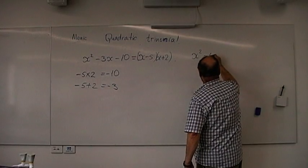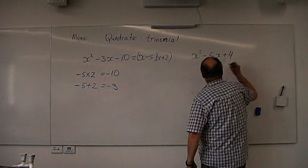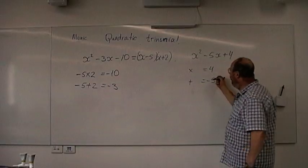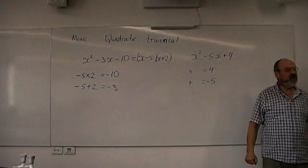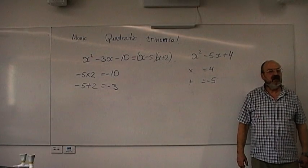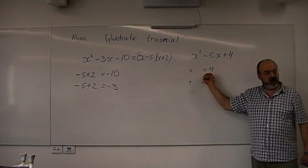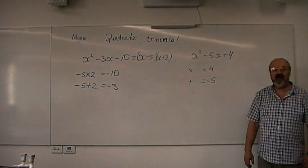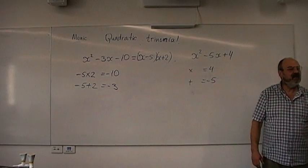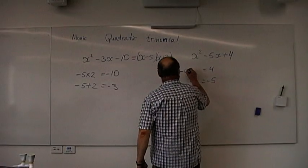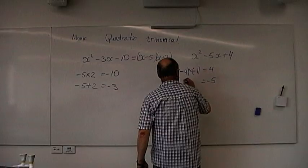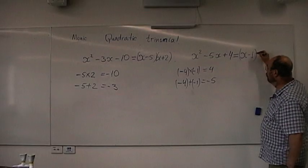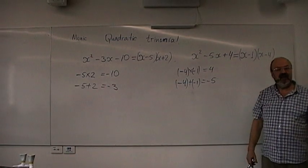Another example: x squared minus 5x plus 4. We're looking for two numbers which multiply to positive 4 and add up to negative 5. Since they multiply to a positive number and add up to a negative number, both must be negative — because negative times negative gives positive, and negative plus negative gives negative. Those numbers are negative 4 and negative 1, so this factorizes to x minus 4 times x minus 1.